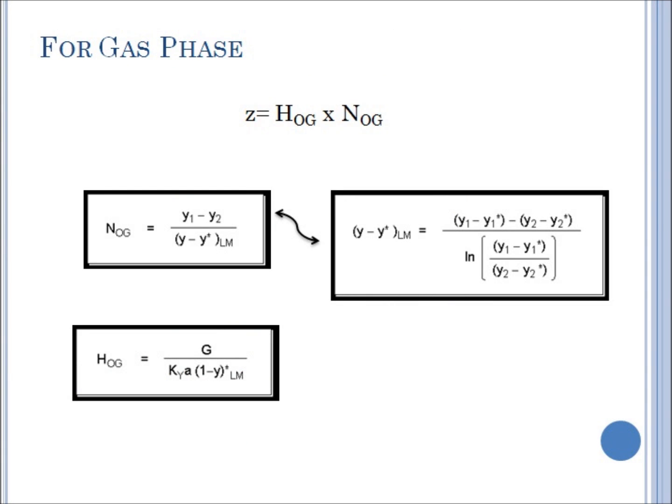In a pack column, we have a gas phase and a liquid phase. For the gas phase, we can compute Z using Z is equal to HOG times NOG. HTU is just equal to HOG, while NTU is equal to NOG for a gas phase. NOG is equal to Y1 minus Y2 over Y minus Y prime, while HOG is equal to G over KYA times 1 minus Y prime.